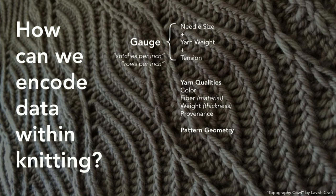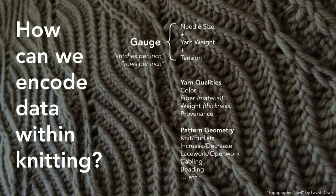Pattern geometry is the other interesting area — looking at the resulting thing being produced rather than the material itself. We can think about whether to use a knit or purl stitch, increasing and decreasing the number of stitches per row, lace work and open work, cabling, adding beads. Really, there are a ton of different knitting techniques, all of which you could use to indicate a data point or data value. This is still sketching out what that design space might be.